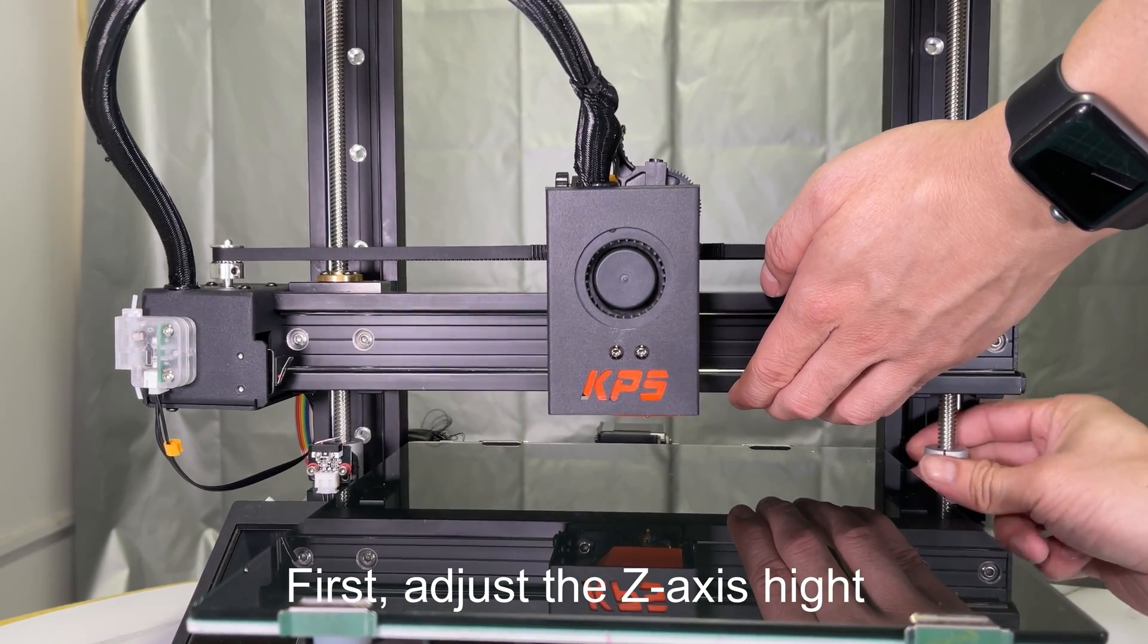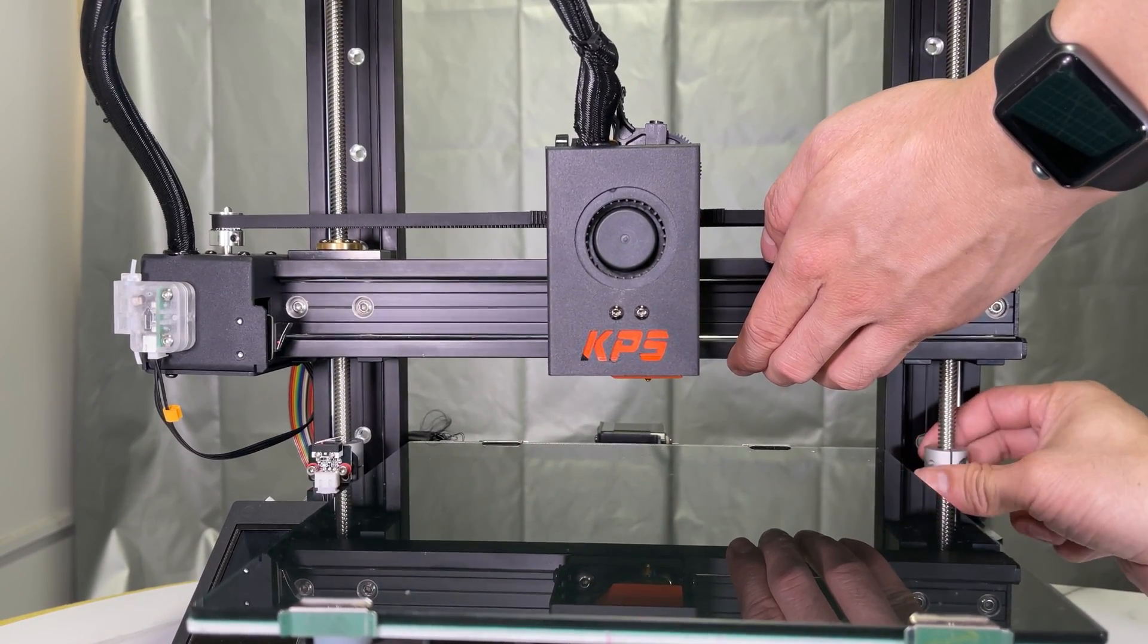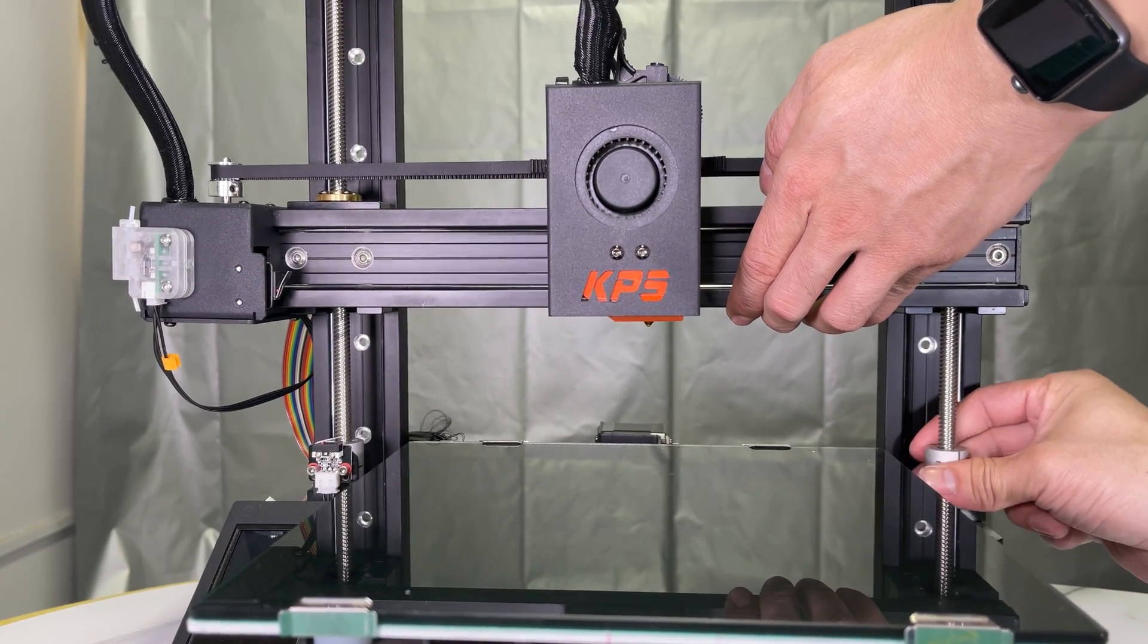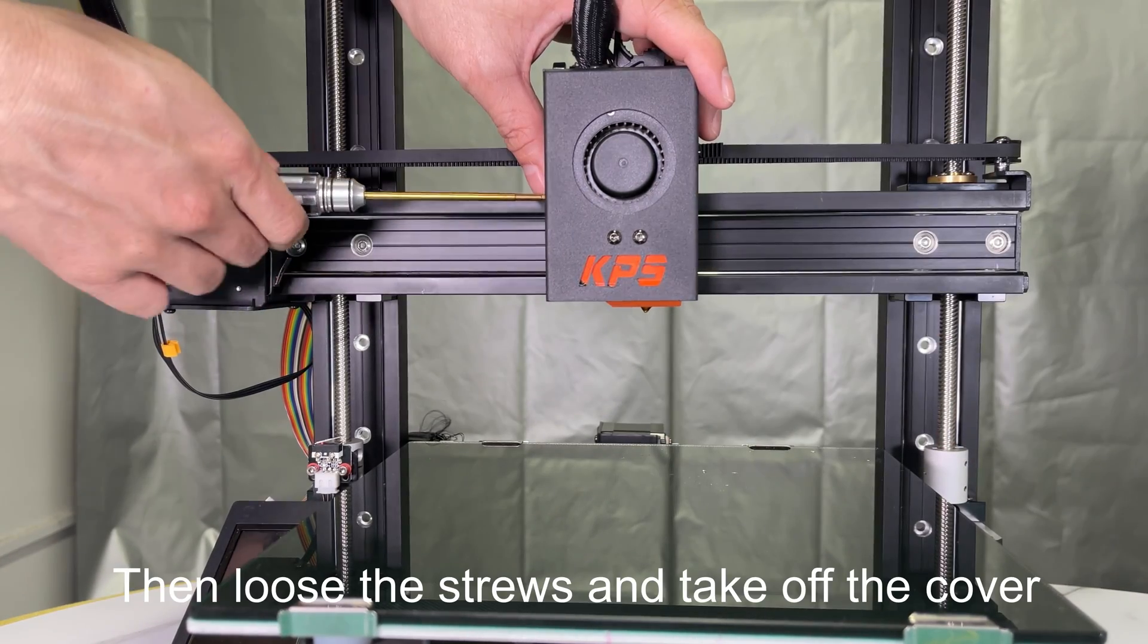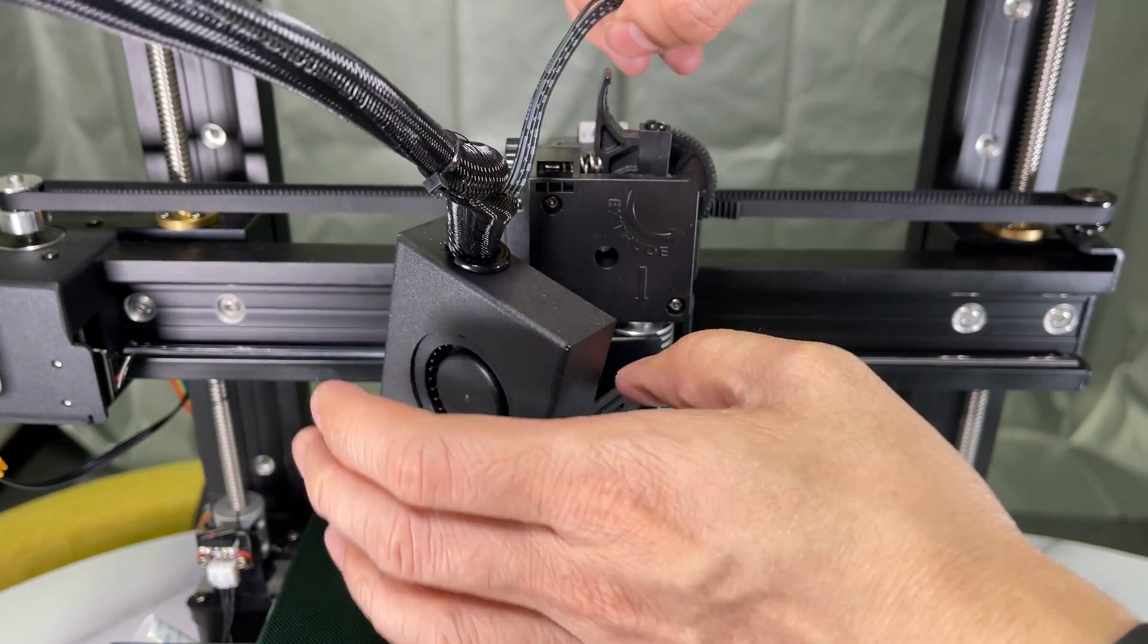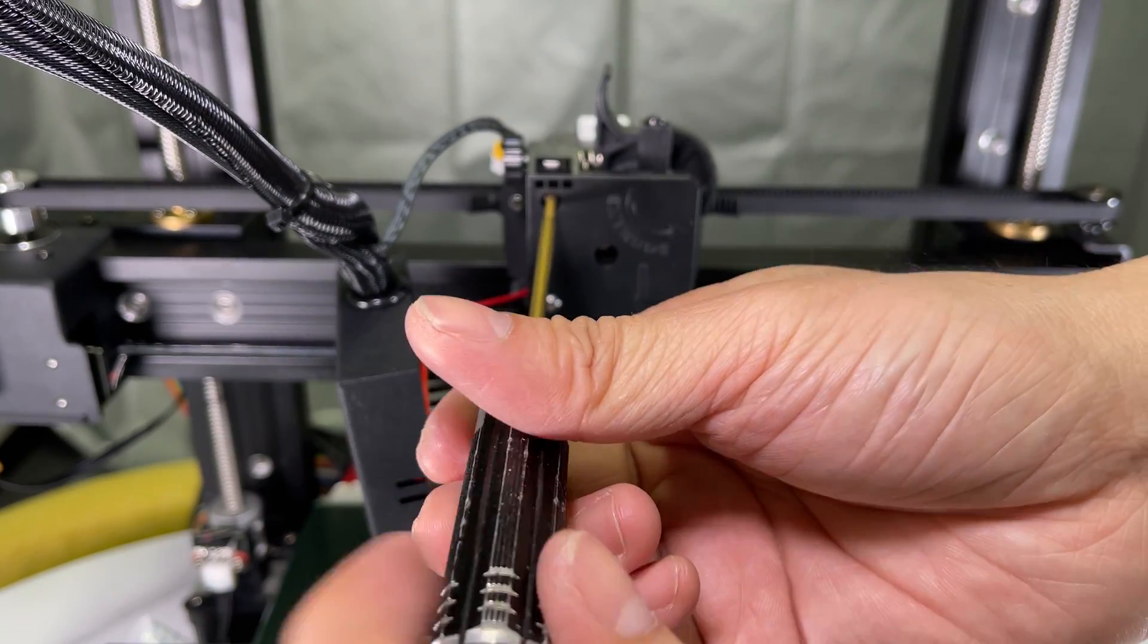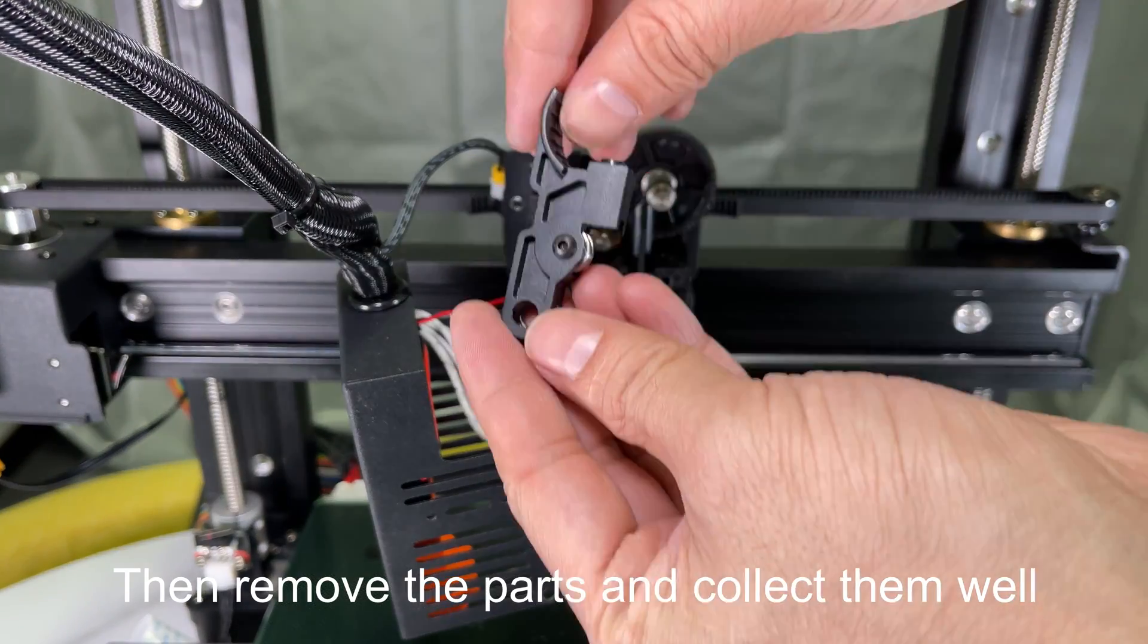First, adjust the Z-axis height. Please operate on the printer instead, in case you get an unbalanced X-axis. Then loosen the screws and take off the cover. Disconnect the motor cable. Loosen the screws and remove the top cover. Then remove the parts and collect them well.